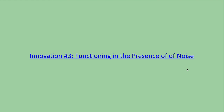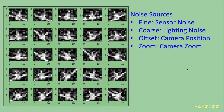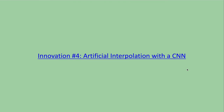Innovation three: functioning in the presence of noise. The next innovation is to make this work in real-world conditions that include four kinds of noise. Fine-grained sensor noise comes from the camera's CCD itself. Coarse-grained lighting noise comes from varying illumination conditions within the cockpit. Camera offset noise is a translational affine operation. And camera zoom is an affine scaling operation.